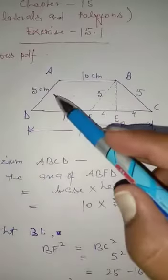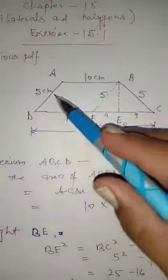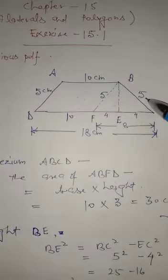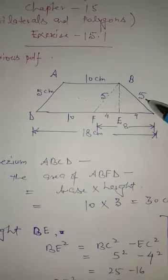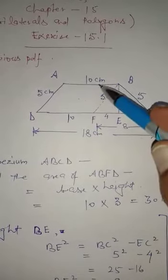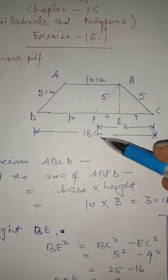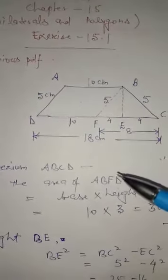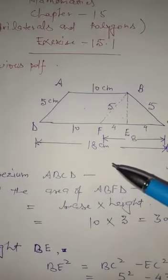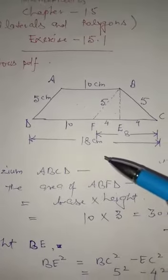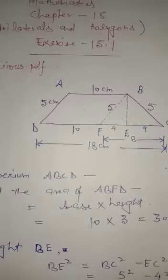This is an isosceles trapezium which has two non-parallel sides equal to 5 centimeter each, and the parallel sides are 10 centimeter and 18 centimeter. You have to find out the height and area.